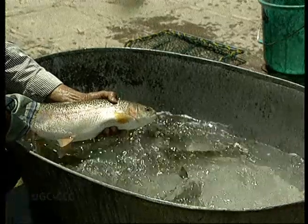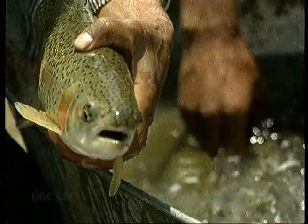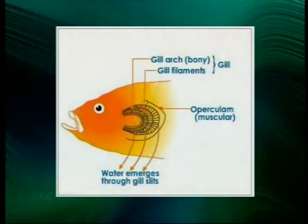Regarding gill ventilation in chondrichthyes: the mouth and spiracle open, the pharynx lowers and creates suction pressure, drawing water from the environment into the mouth. The mouth and spiracle then close and water is forced over the gills. Oxygen-rich water exchanges oxygen with the blood, and then the gill slits open and water is expelled. This concludes the discussion of gill structure in chondrichthyes and the problems of breathing in water.